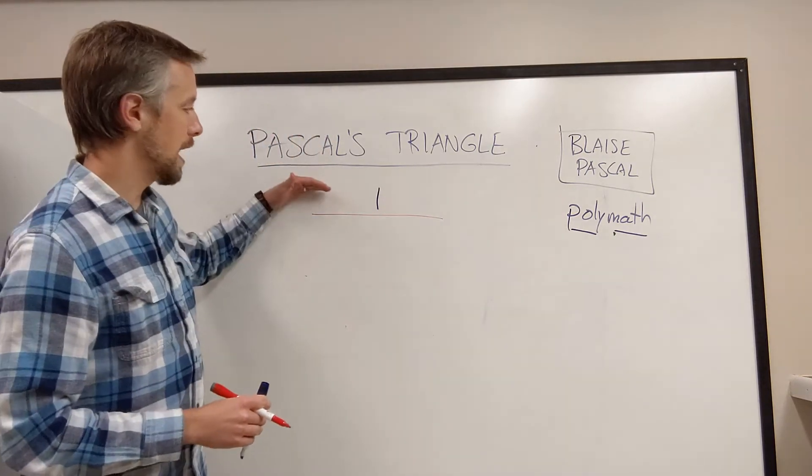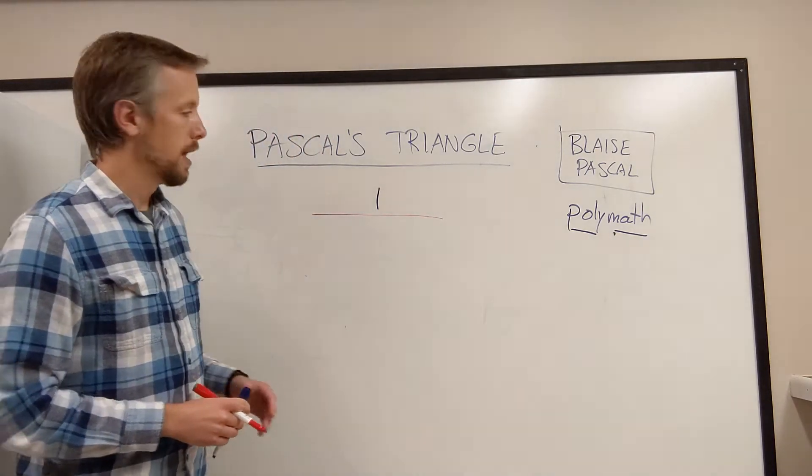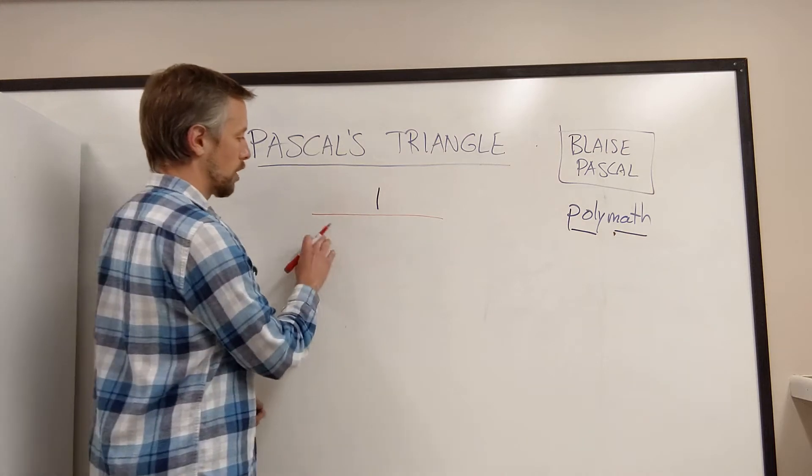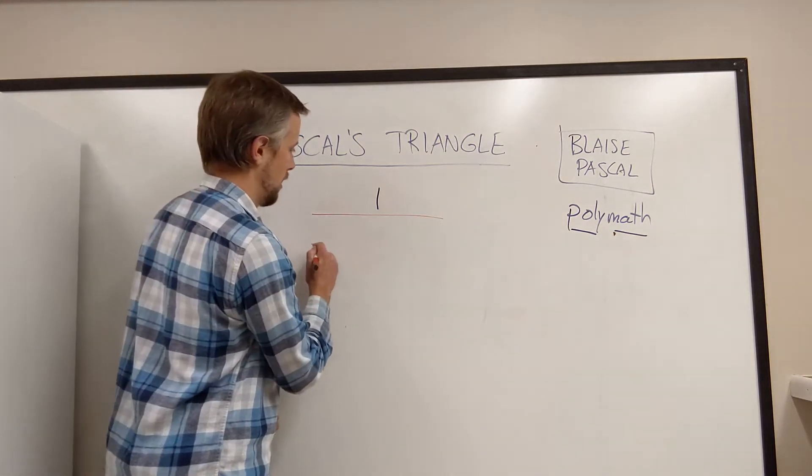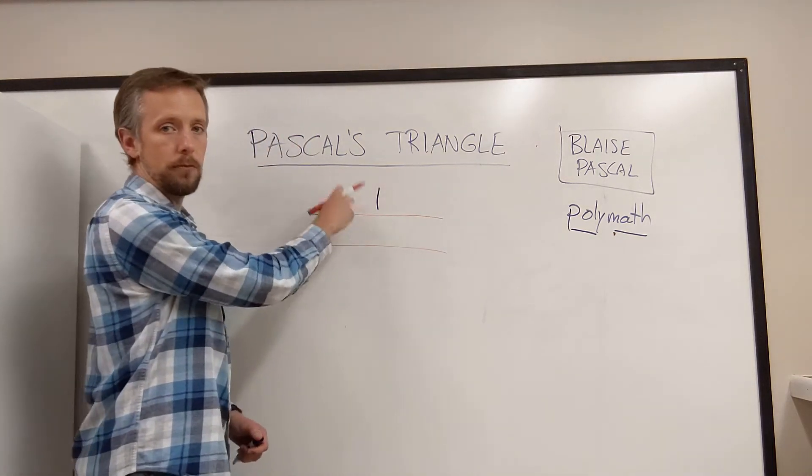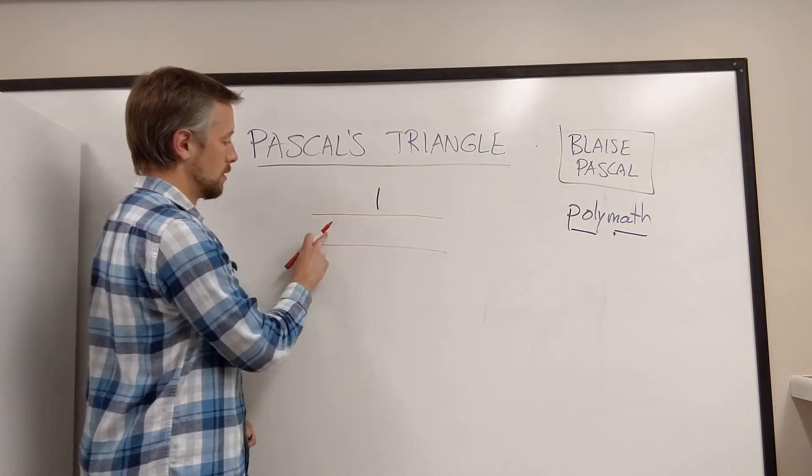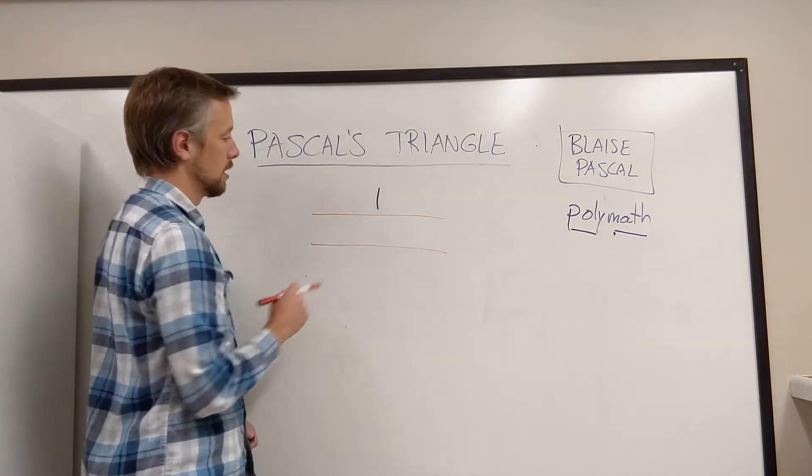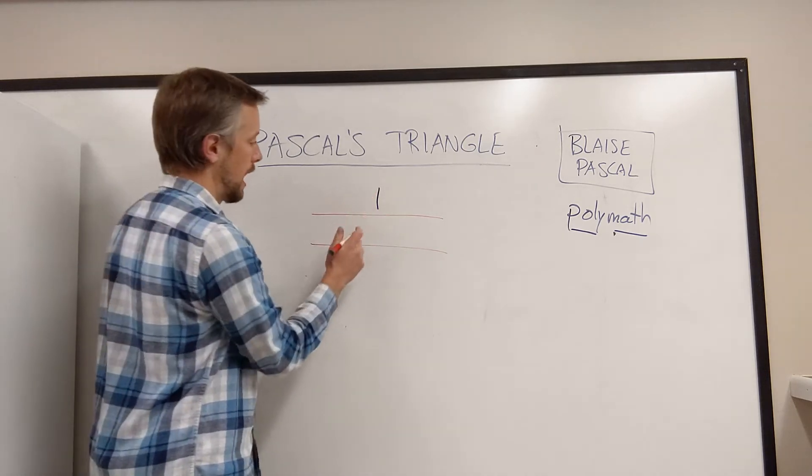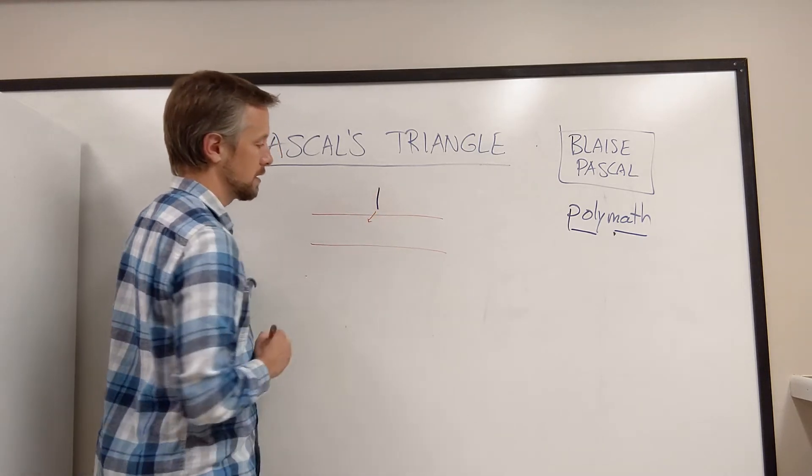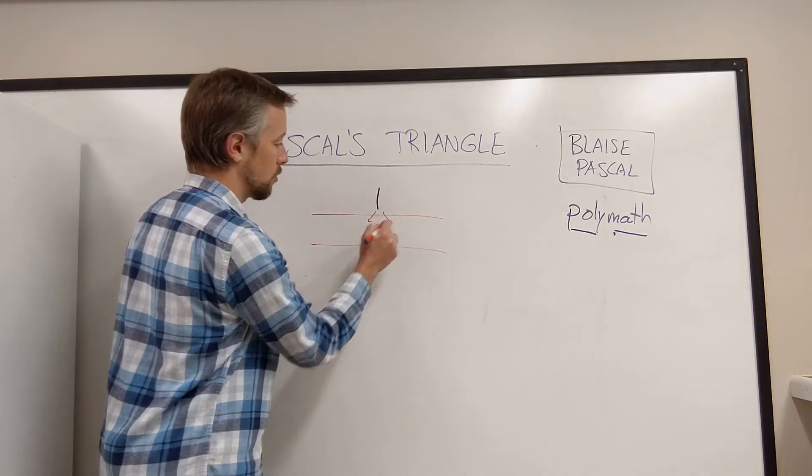We're going to build this triangle from top down, and in each step, we're going to be adding a row. And that row, we're going to build from the row directly above it. So for this second row, here's what we're going to do. We're going to take the 1 and we're going to bring it down and to the left, and we're going to bring it down and to the right.